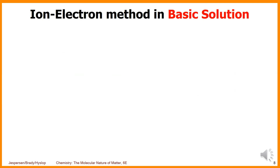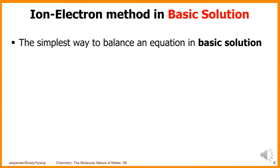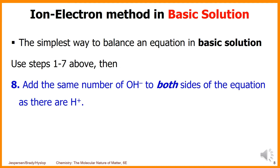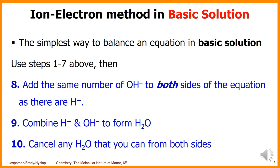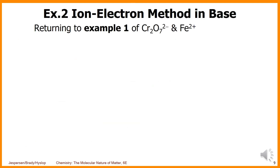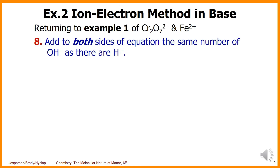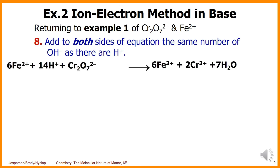If we want to apply the ion-electron method in basic solution, we add additional steps. The simplest way is to use steps one through seven above, then add the same number of OH⁻ to both sides of the equation as there are H⁺ ions, then combine H⁺ with OH⁻ to form H₂O, and finally cancel any H₂O that appears on both sides. Returning to example one: